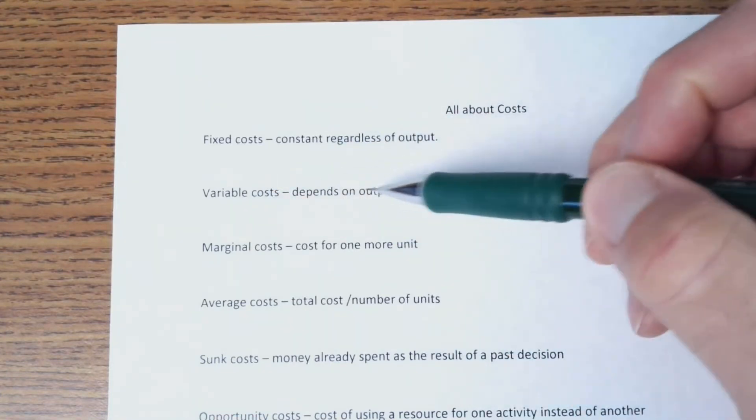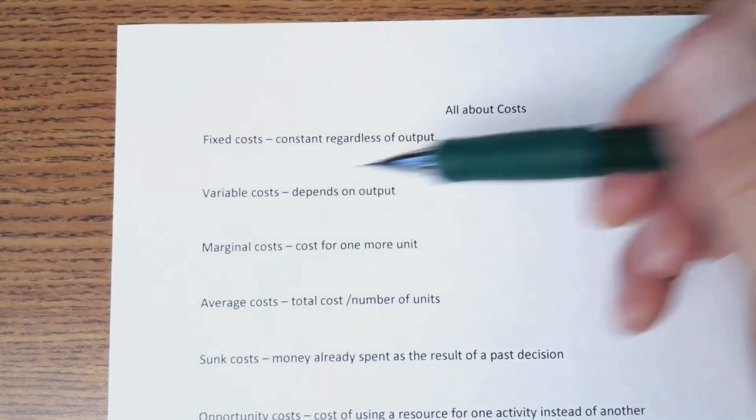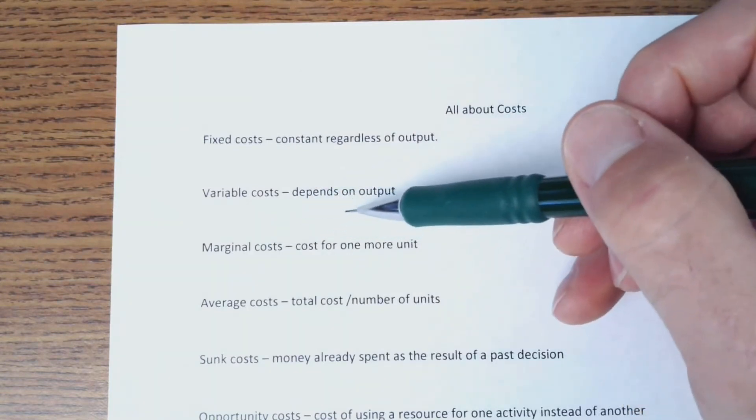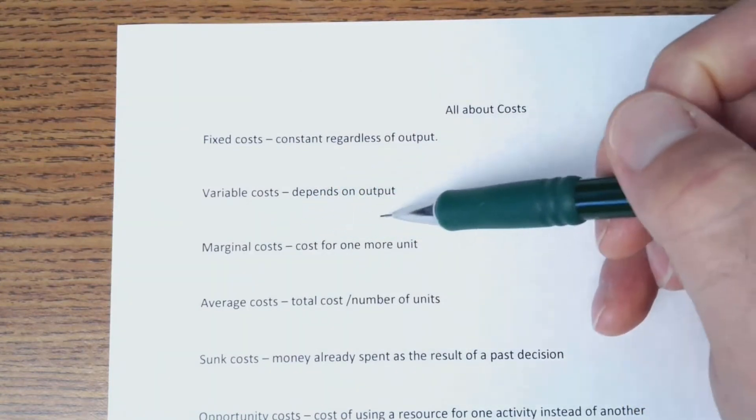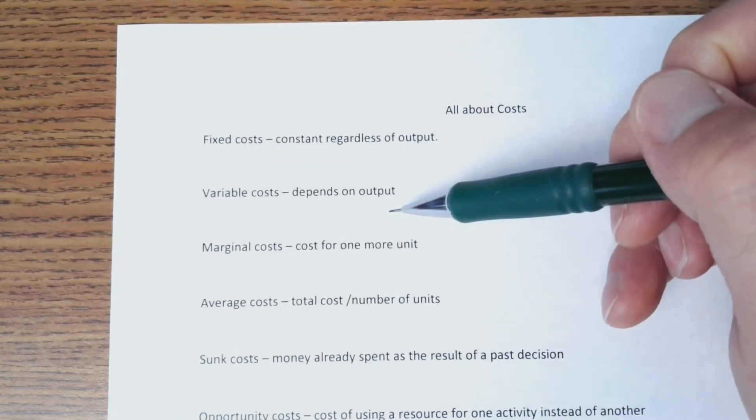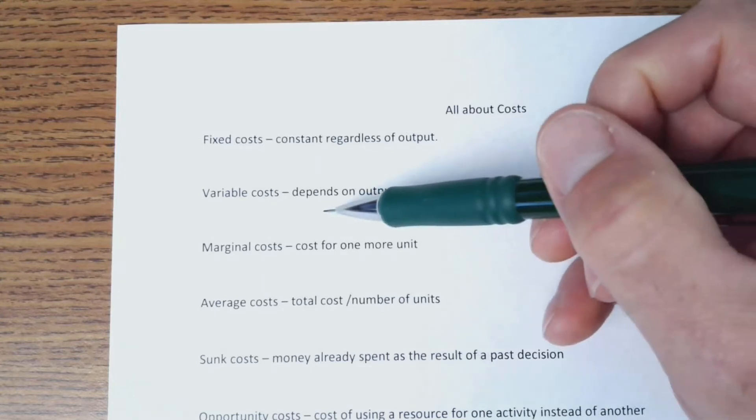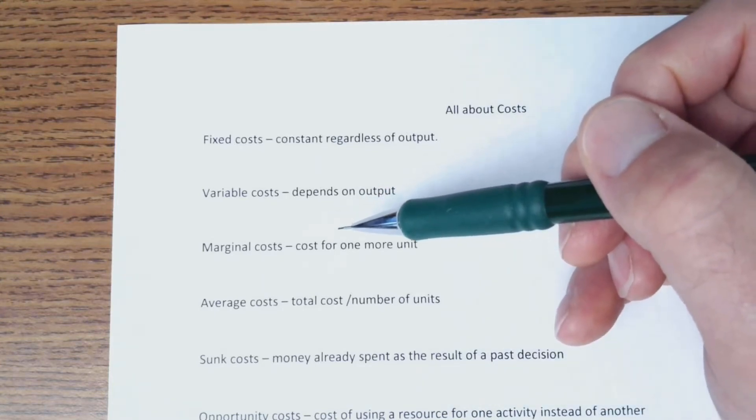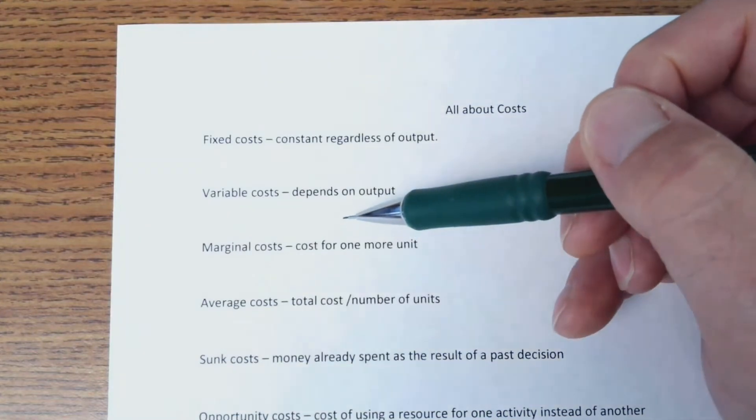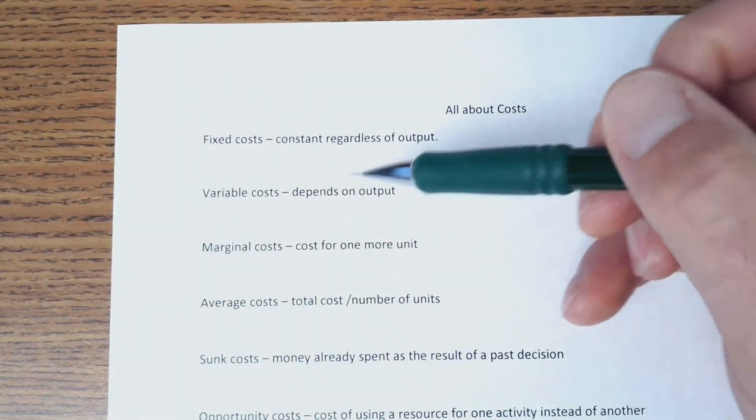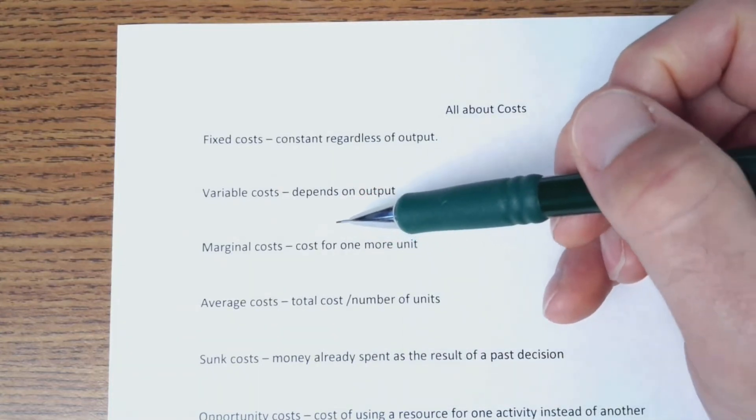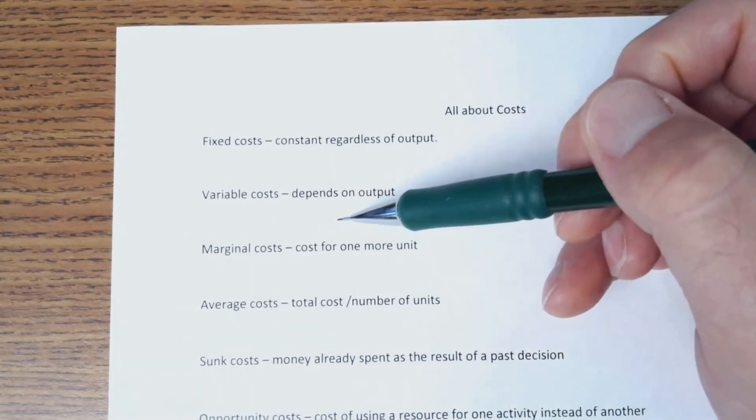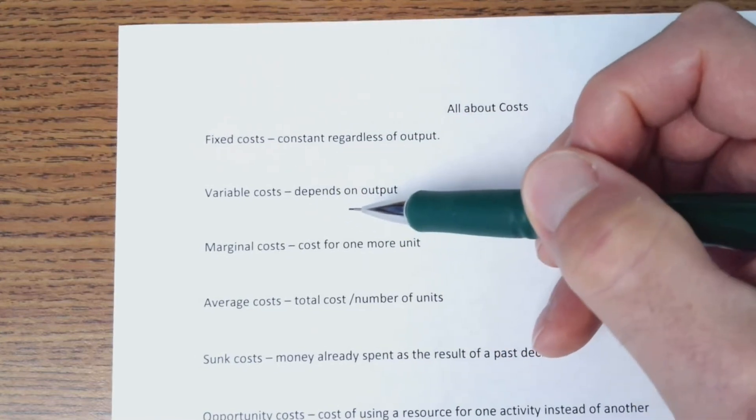Variable costs depend on output. So they go up or down depending on how much you are making. Materials and labor would be variable costs. Now some labor, if you have to hire someone on a salary and you've already contracted with them to pay them so much for the entire year, that would be more of a fixed cost. But a variable cost would be like labor where you're paying by the hour. You can cut hours if you need to, or increase hours.